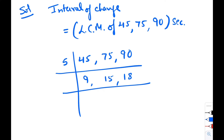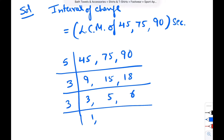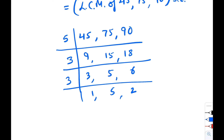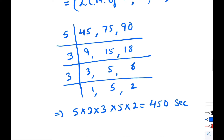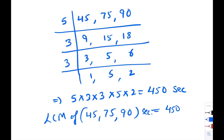Now again divide by 3, we get 3, 5, 6. Again divide by 3, we get 1, 5, and 2. Therefore LCM is 5 × 3 × 3 × 3 × 3 × 5 × 2, which equals 450. So the LCM of 45, 75, and 90 seconds is 450 seconds.